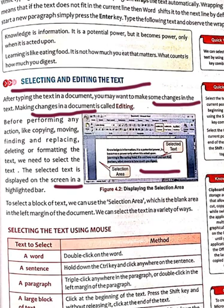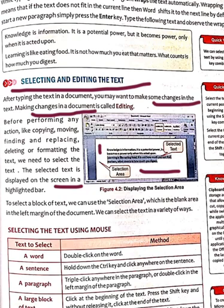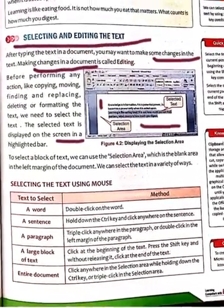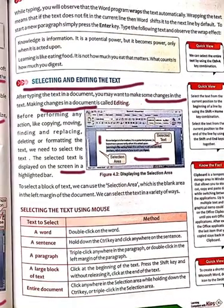To select a block of text we can use the selection area. The selection area is the blank area in the left margin of the document. Suppose you have to select the whole line — you click and drag in that blank area on the left side of the margin, and the whole block of text will be selected. We can select the text in a variety of ways.